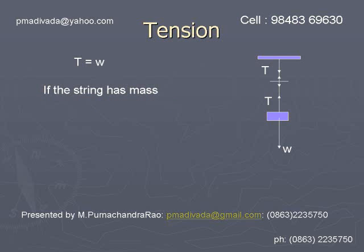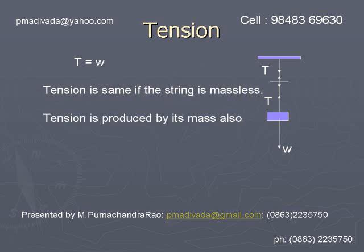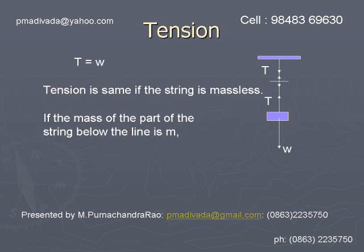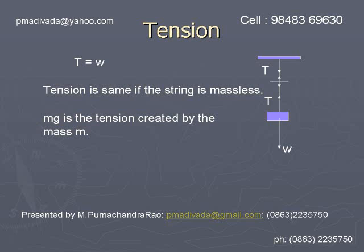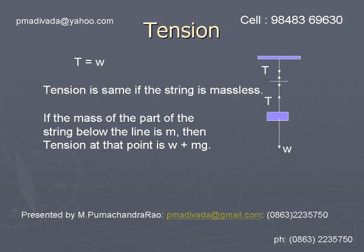If the string is having mass, then we have to consider the mass of the string also while calculating the tension. For example, consider the horizontal line — below that line, up to the block, if the mass of that string is small m, then its weight mg will also act at that line. Hence, the tension at that line will be equal to W plus mg, if the mass of the string up to that part is considered as small m.